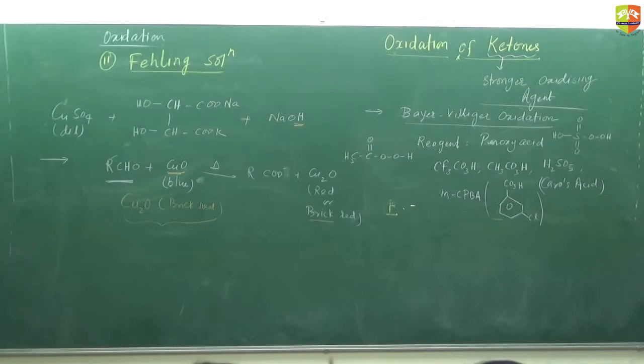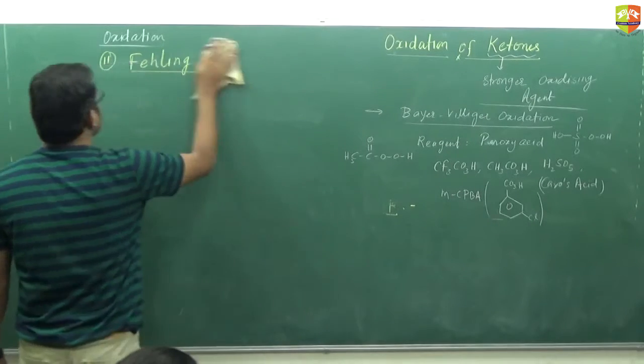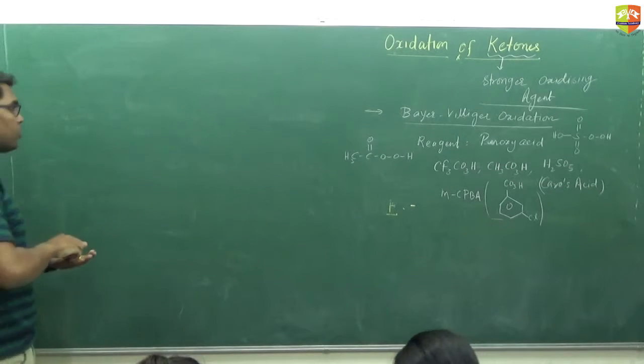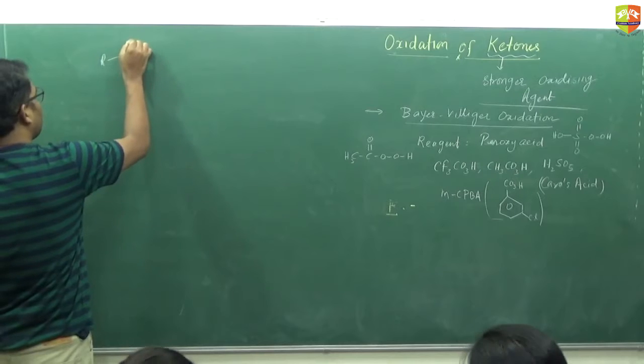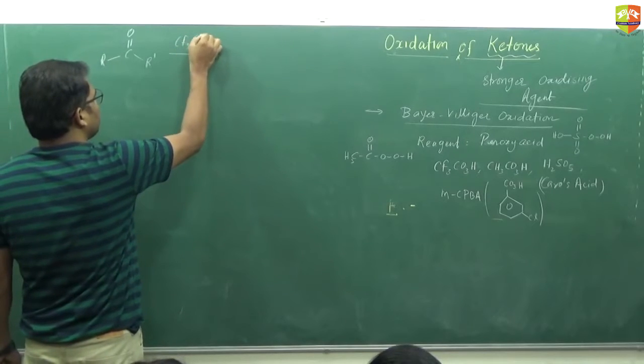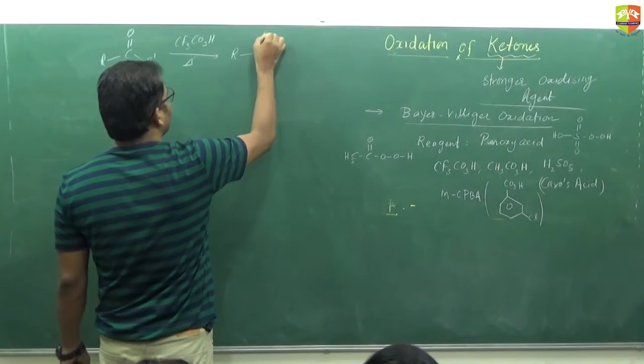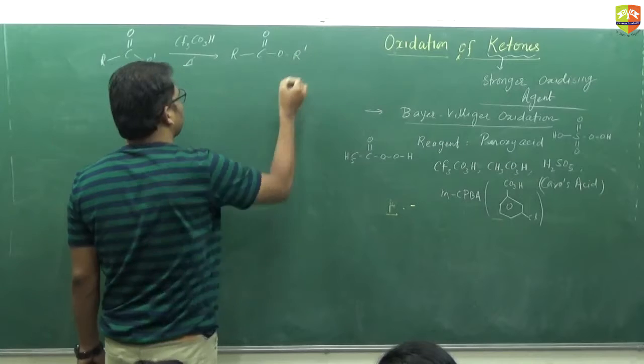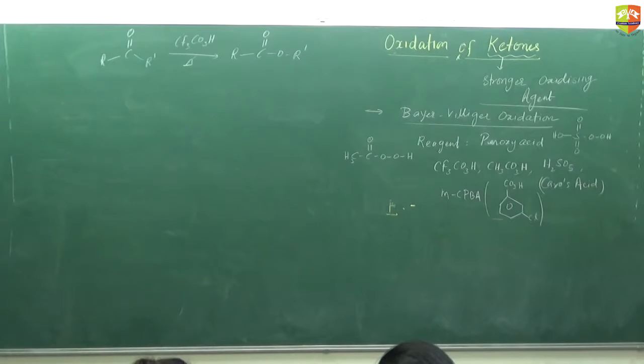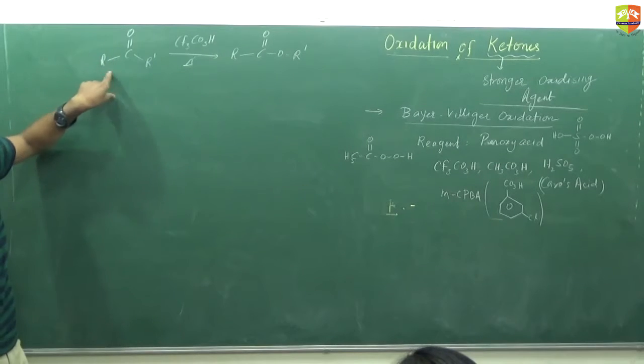In this reaction, the ketone converts into ester. So suppose the reaction is R-C double bond O-R' when heated with CF3CO3H, the product is R-C double bond O-O-R'. One oxygen you need to insert between one of the alkyl groups and carbonyl group. Which alkyl group? The more electron releasing group, that and carbonyl group.